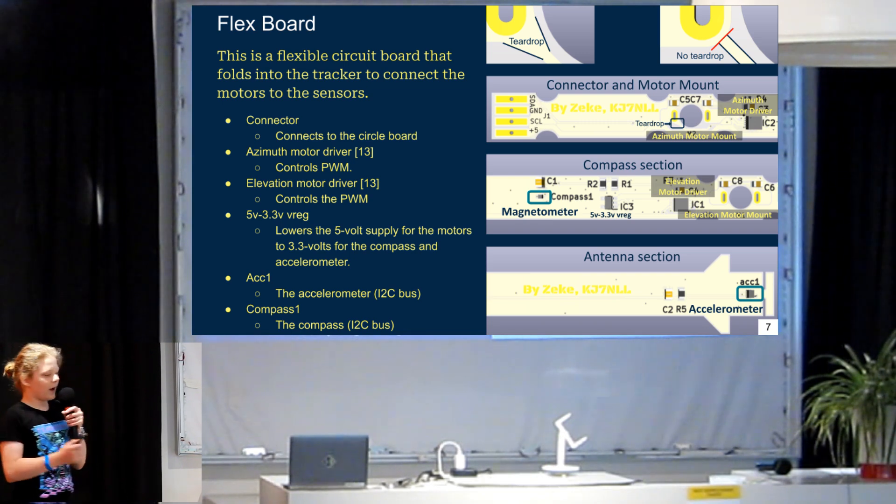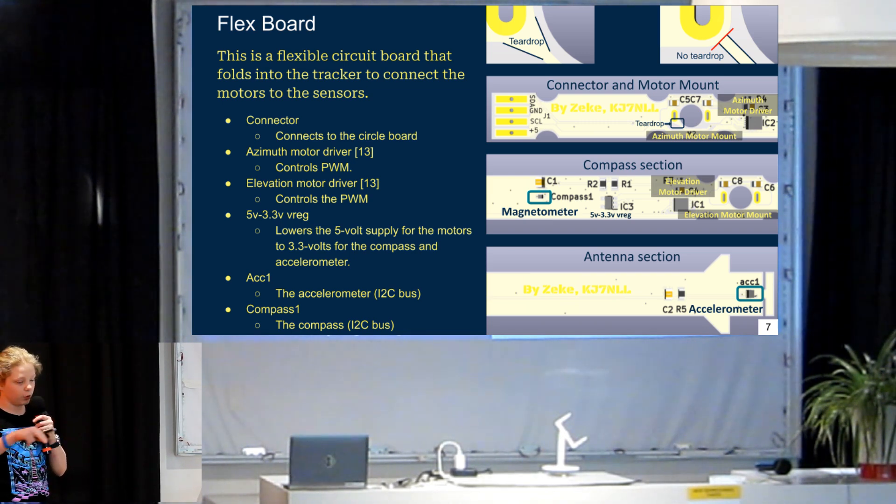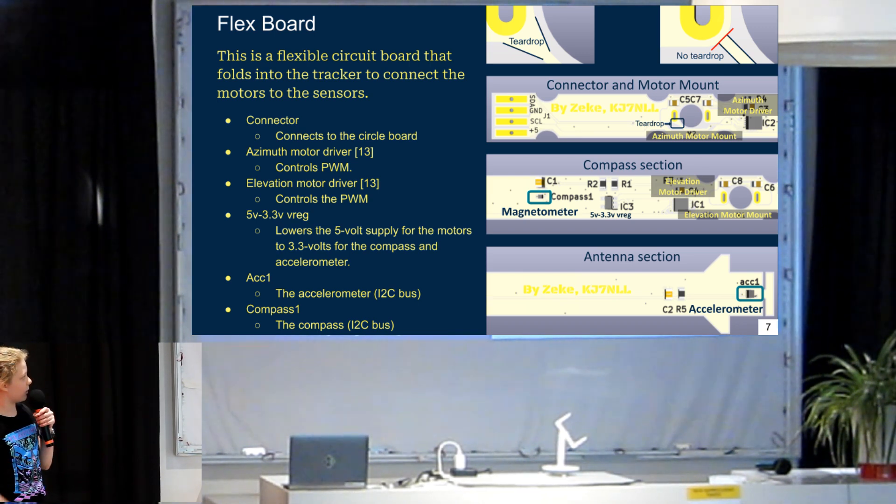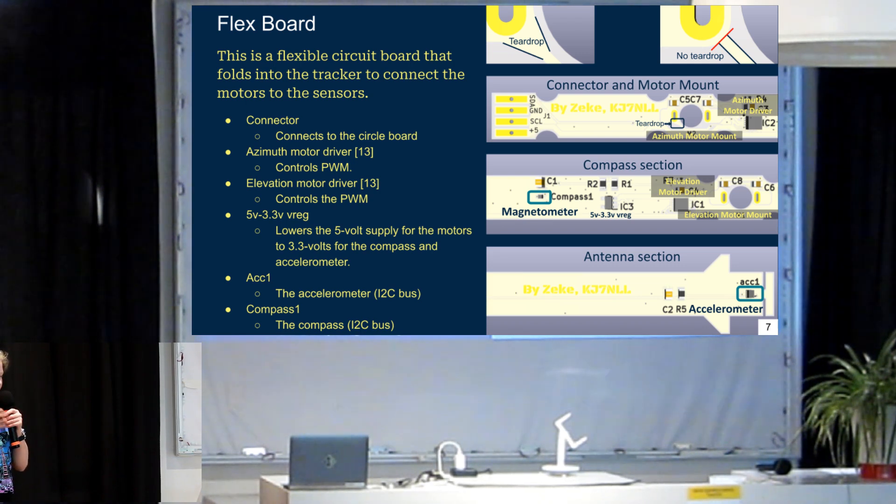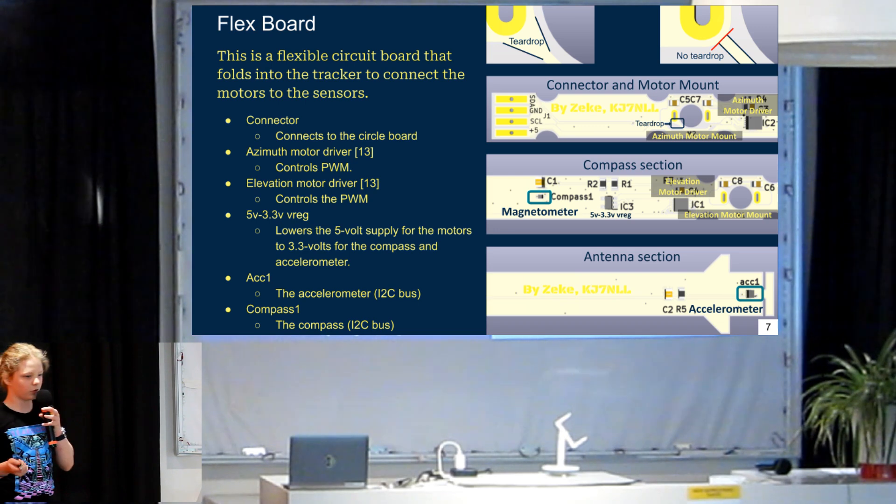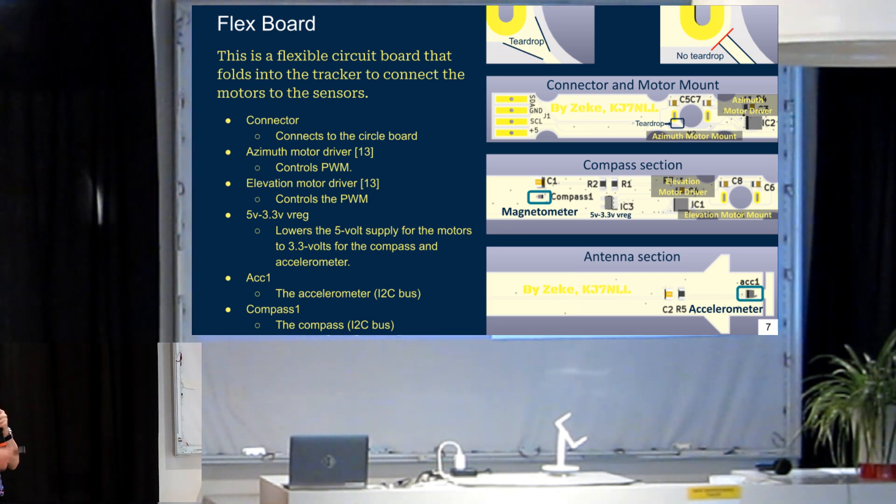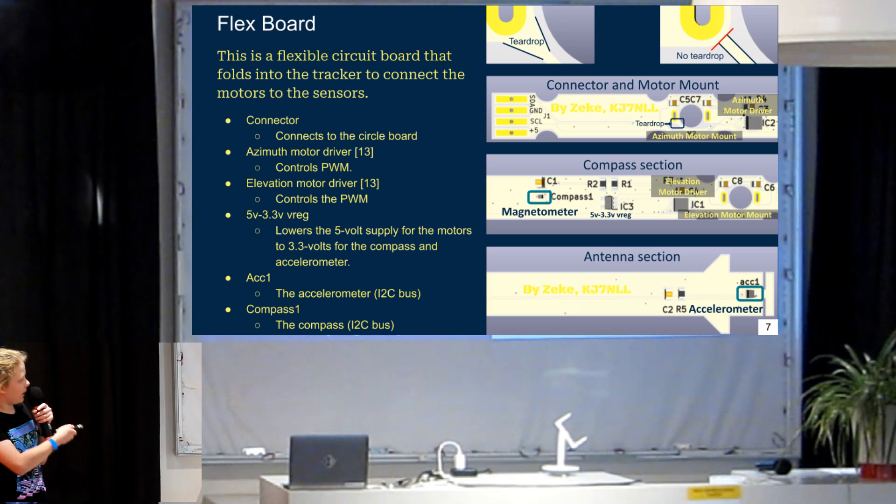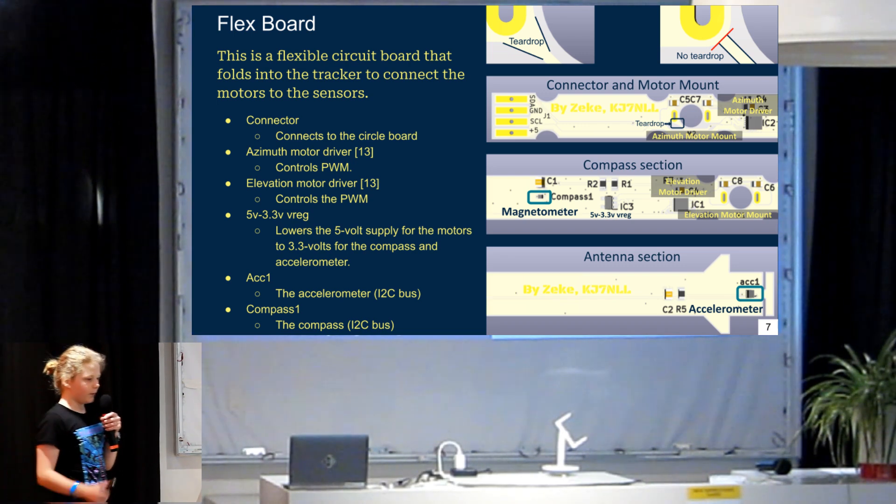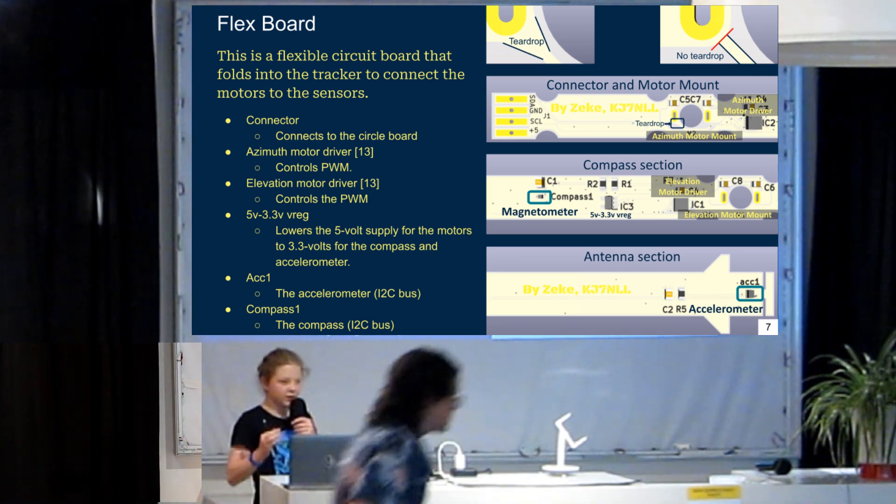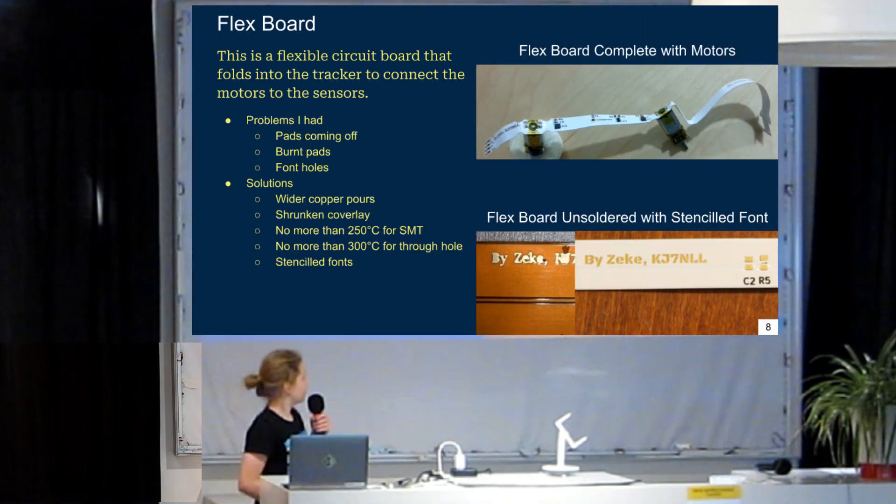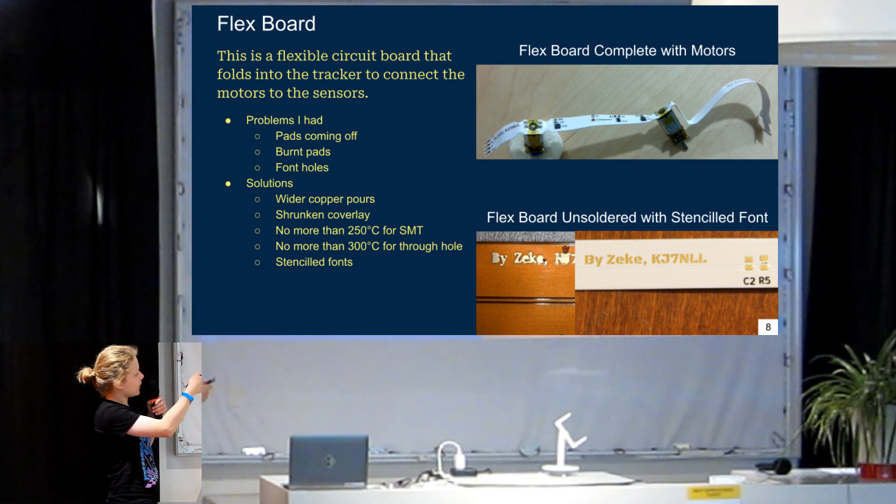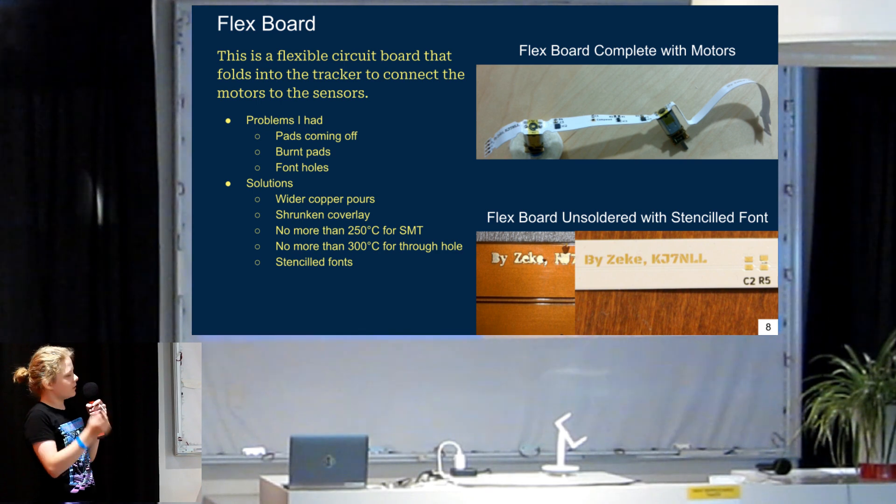And then, the theta motor mount is where we directly solder the motor for theta onto the flexible PCB. And so, that will allow it to be able to move, and it will bend all up into that area on the tracker. And then, the motor driver controls the theta motor, which is controlled by PWM. And then, the magnetometer measures position, and there's the phi motor, which is basically the same thing as theta. And then, we have our accelerometer for measuring the phi position. And it bends and connects right into the arrow, which is where the antenna goes. And so, these are pictures of the actual flex board, and notice how the motors are directly soldered to it. And this allows me to bend it all up.